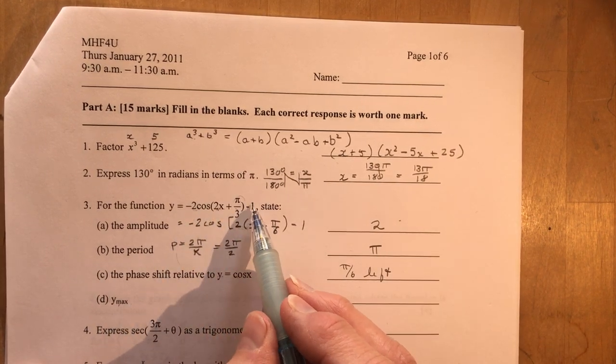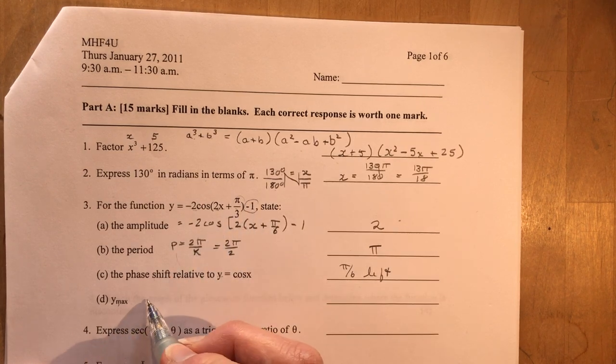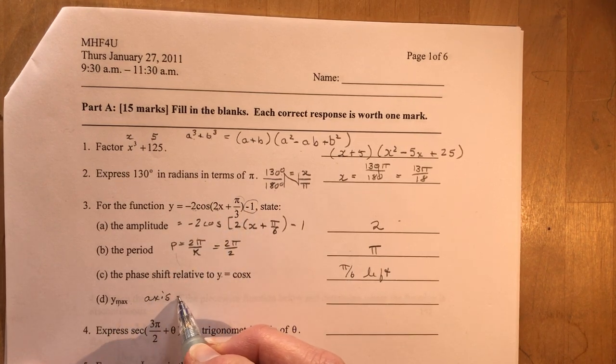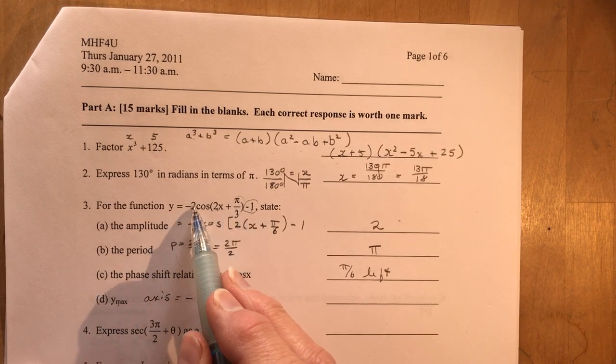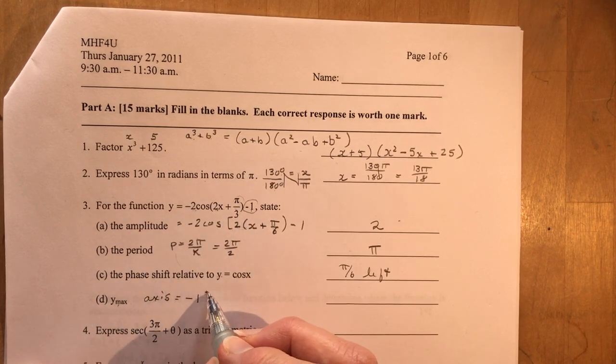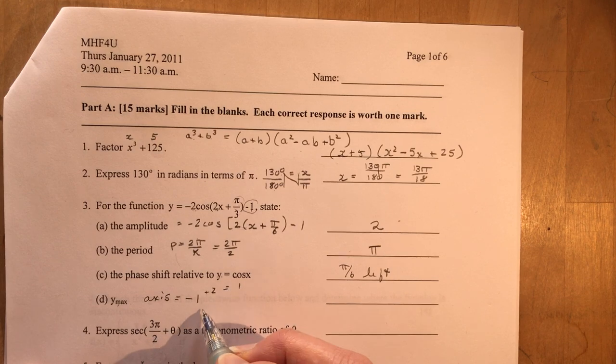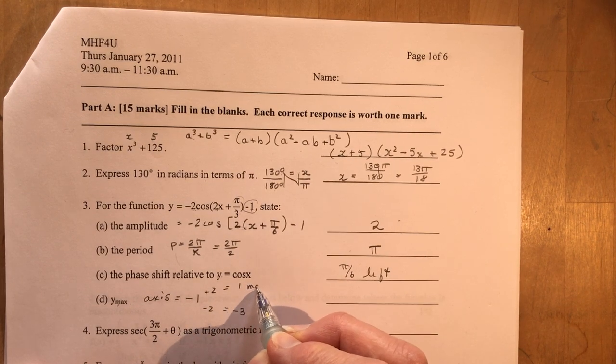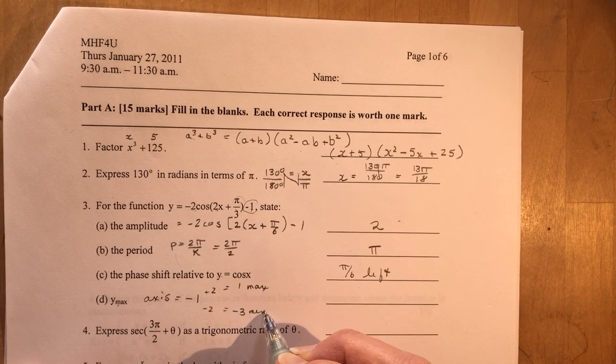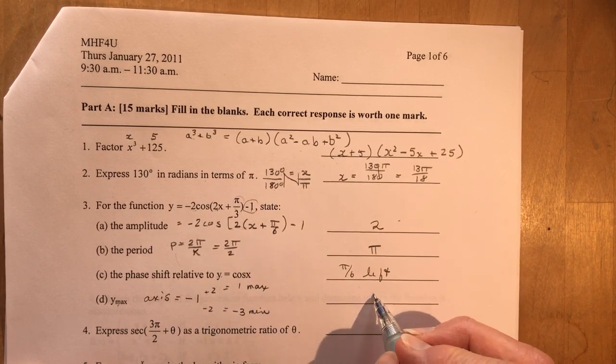What is the y maximum? Okay, so this is your axis. So axis is at negative 1. And so I'm going to add and subtract 2 from that. That would give me my maximum. And minusing 2 would give me the minimum. So here's my max. Here's my min. But I'm only asked for the max. So the max is 1.